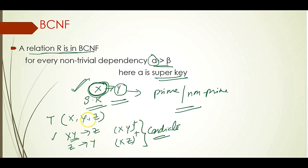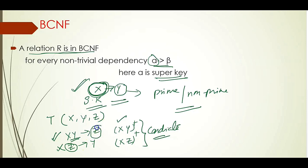A candidate key is also a super key. Now look at the functional dependency XY derives Z: XY is a candidate key and therefore a super key — this satisfies the BCNF condition. Now look at Z derives Y: here Z is not a super key. So this case — whether Z is a prime or non-prime attribute, and whether Y is prime or non-prime — doesn't matter. Since Z is not a super key, this relation T is not in BCNF form.